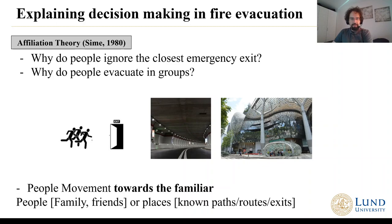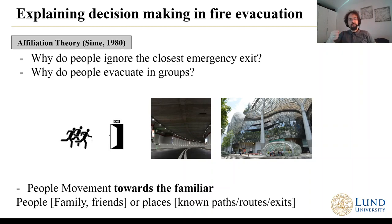The first one is affiliation theory, which explains why people ignore the closest emergency exit, and why people evacuate in groups. This is mostly because people during an emergency do not actually move away from the emergency, but they move towards the familiar — towards familiar places or familiar people, especially when there is uncertainty about the situation. This implies that people will tend to move towards people they have a bond with, such as family members or friends, which is something observed very often in fire emergencies.